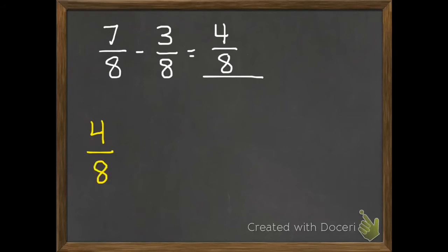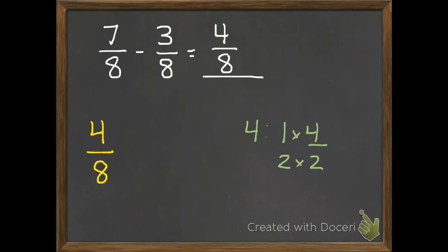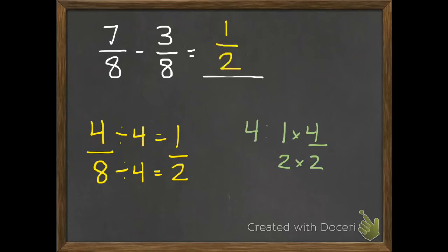I'm going to write 4 eighths over here and find my factors of 4: 1 times 4, and 2 times 2. We want to try the greatest number, so I start with 4. Can I divide 8 evenly by 4? Yes. So if I divide each of these by 4, 4 divided by 4 is 1, and 8 divided by 4 is 2. So 7 eighths subtract 3 eighths equals 1 half.